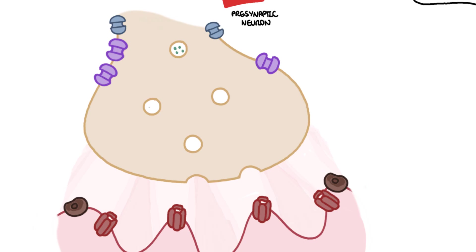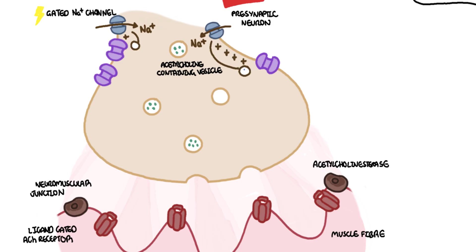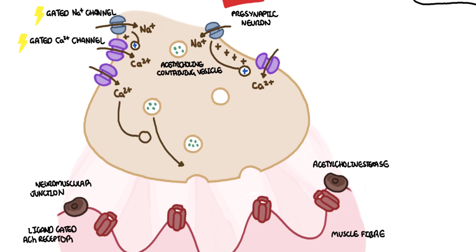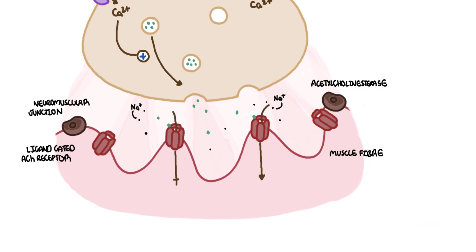The presynaptic neuron houses vesicles containing acetylcholine at its terminal. When an action potential travels along the neuron, the voltage-gated sodium channels open, allowing influx of sodium ions inside the cell. This causes a positive electrical gradient, which then triggers voltage-gated calcium channels at the terminals to open up, allowing calcium ions to enter the cell. Calcium ions trigger the vesicles to release acetylcholine, a neurotransmitter, into the synaptic cleft at the neuromuscular junction. Acetylcholine binds to ligand-gated sodium channels, allowing sodium influx into the muscle, which eventually causes muscle contraction.